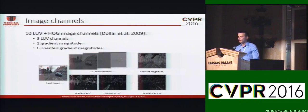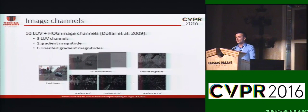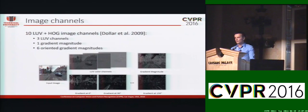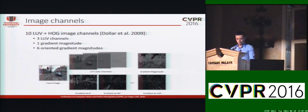As baseline image features, we start from the 10 LUV plus HOG image channels, consisting of three color channels, one gradient magnitude, and six oriented gradient magnitudes. These channels are frequently used for sliding window based detection approaches.